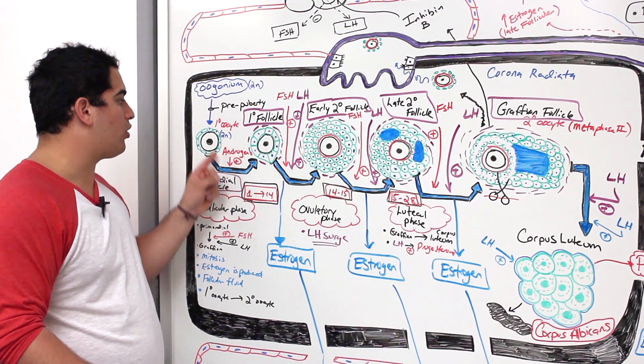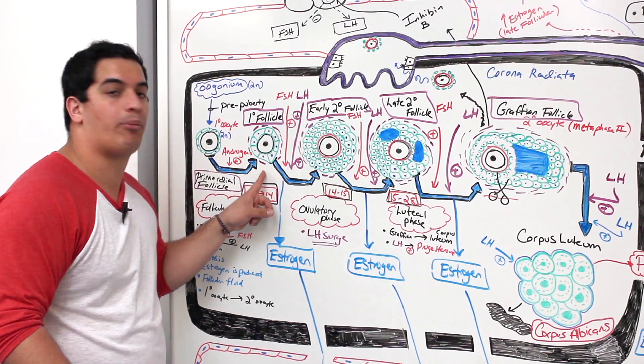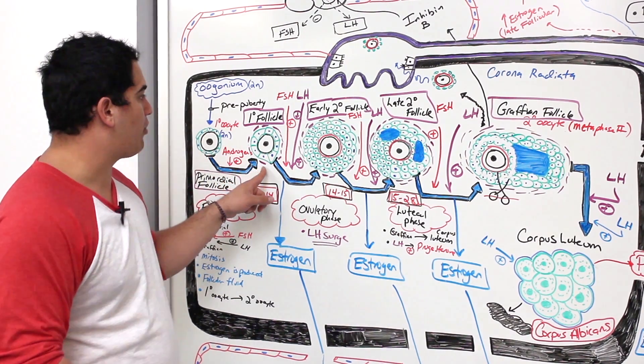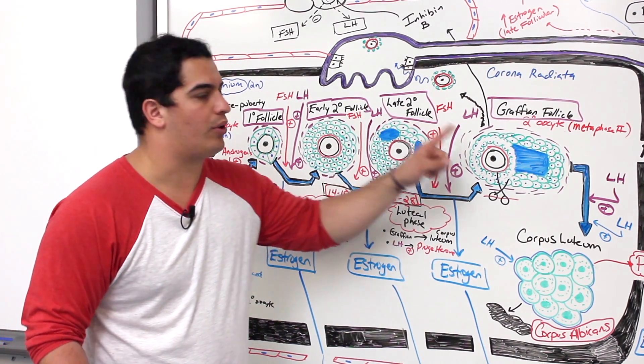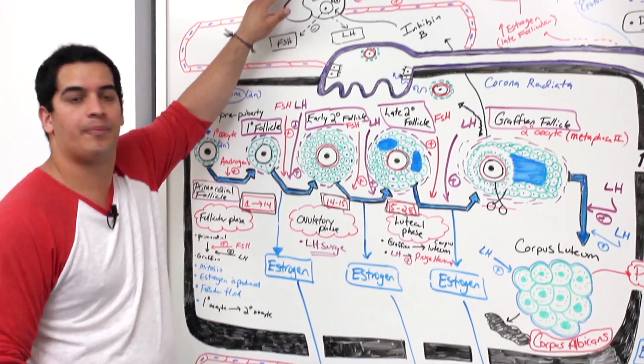Once you hit puberty, these primordial follicles, a certain amount of them due to the localized androgens in the area, are converting this primordial follicle into a primary follicle. Then if you remember, that primary follicle gets converted into an early secondary to a late secondary into a graafian. Who triggers that? We got to come up to hypothalamus.